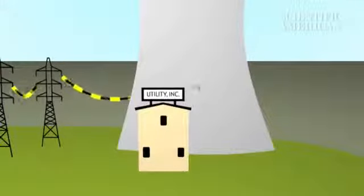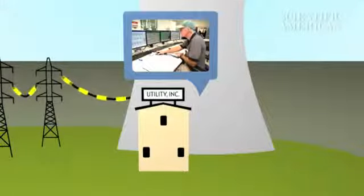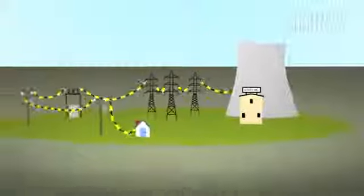For utilities, this means balancing a heavy load, trying to match the supply of electricity perfectly and nearly instantly with demand. When demand outpaces supply, everything goes dark. A blackout.